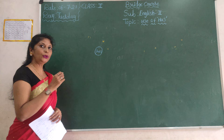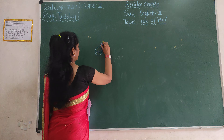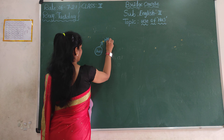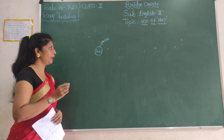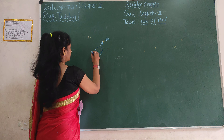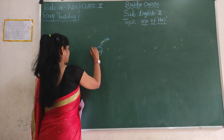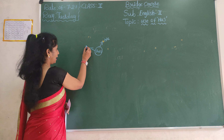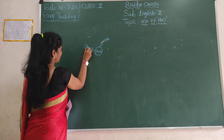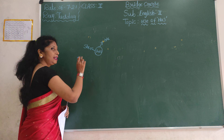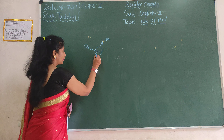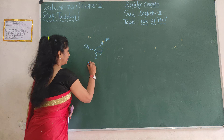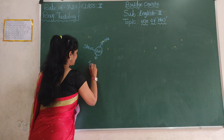We use 'has' for he — he has. We use 'has' for she — she has. We use 'has' for it — it has.